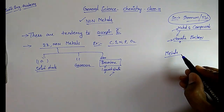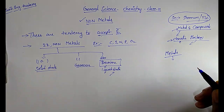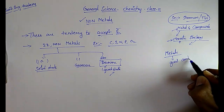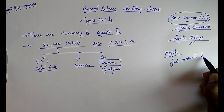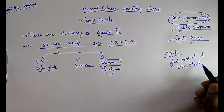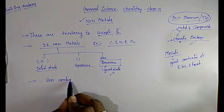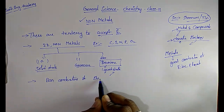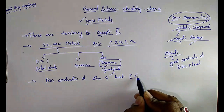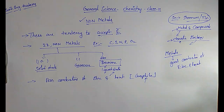Metals have free electrons and a tendency to donate electrons, so they are good conductors of electricity and heat. But non-metals are poor conductors of electricity and heat — except graphite, because graphite is a good conductor of electricity.